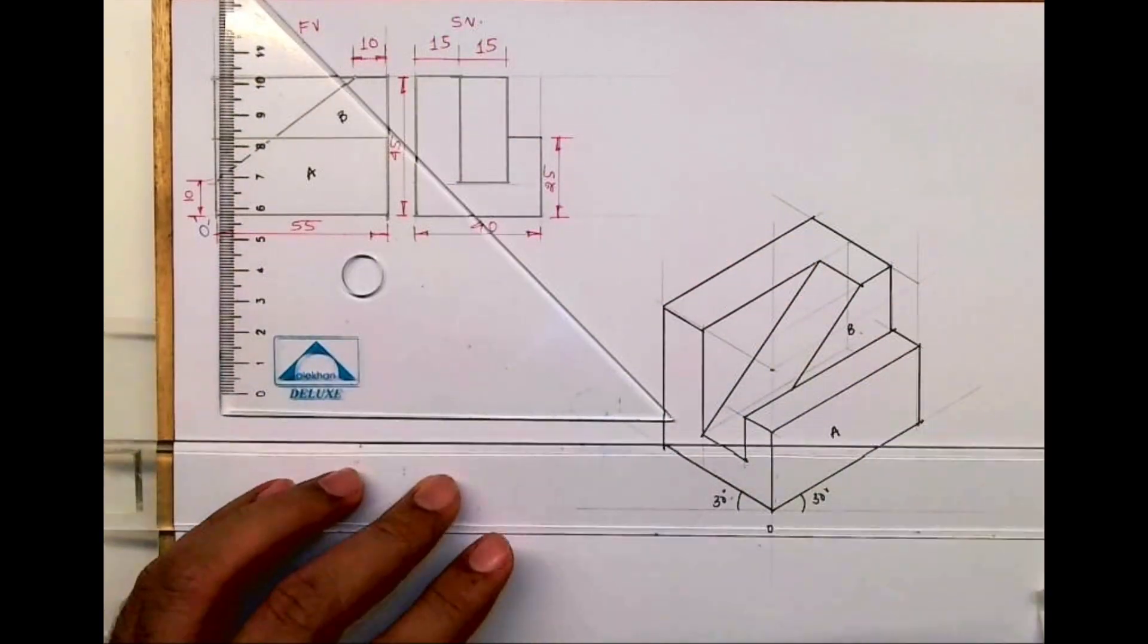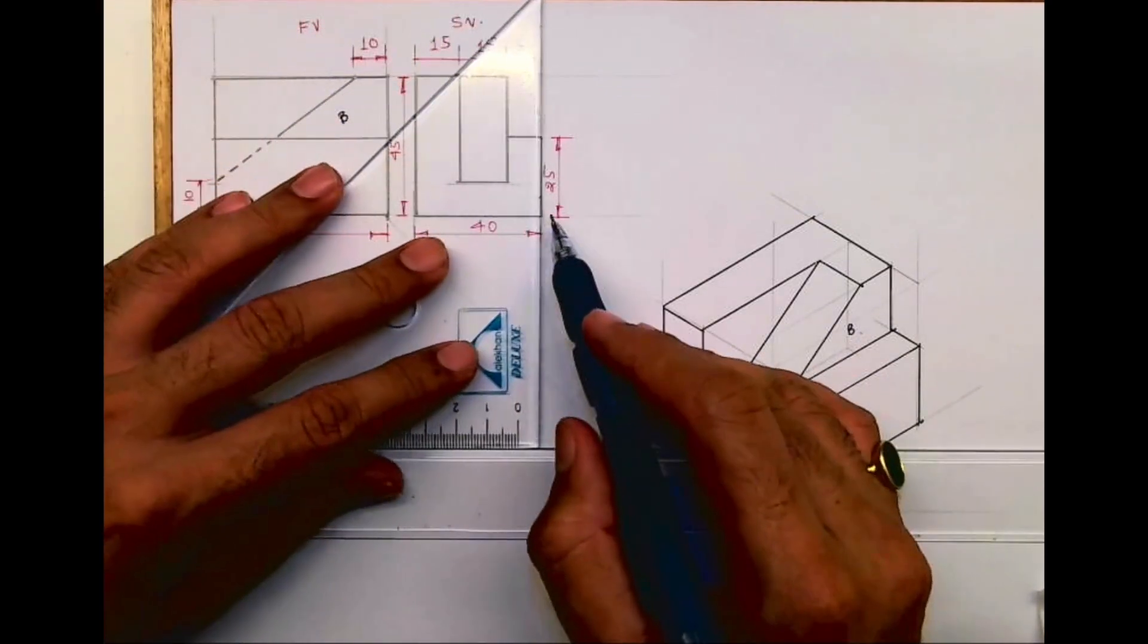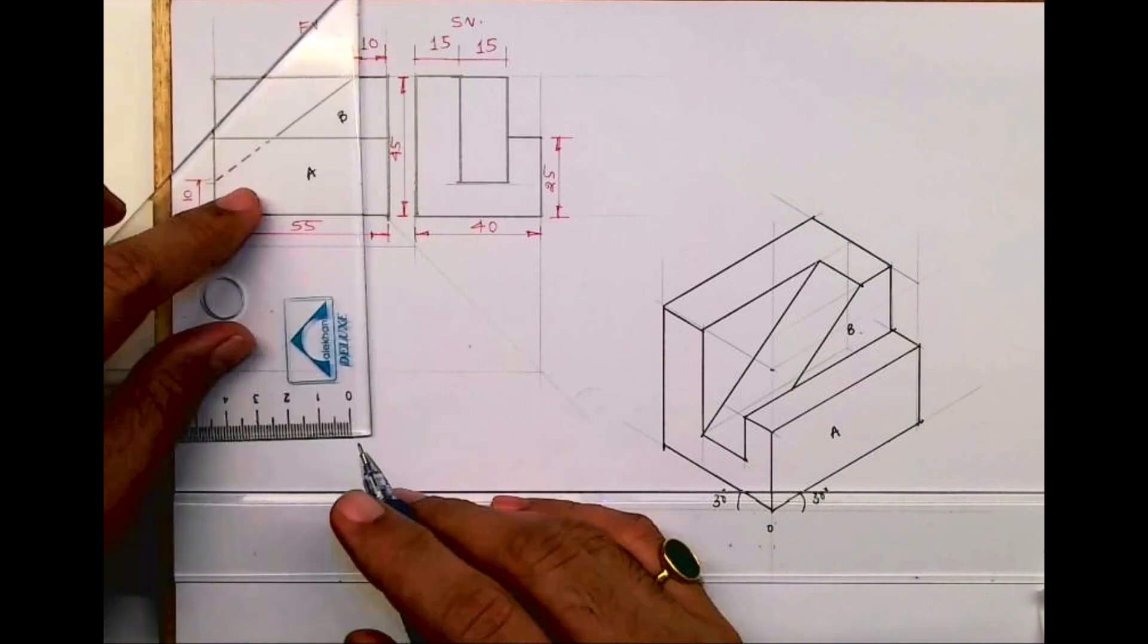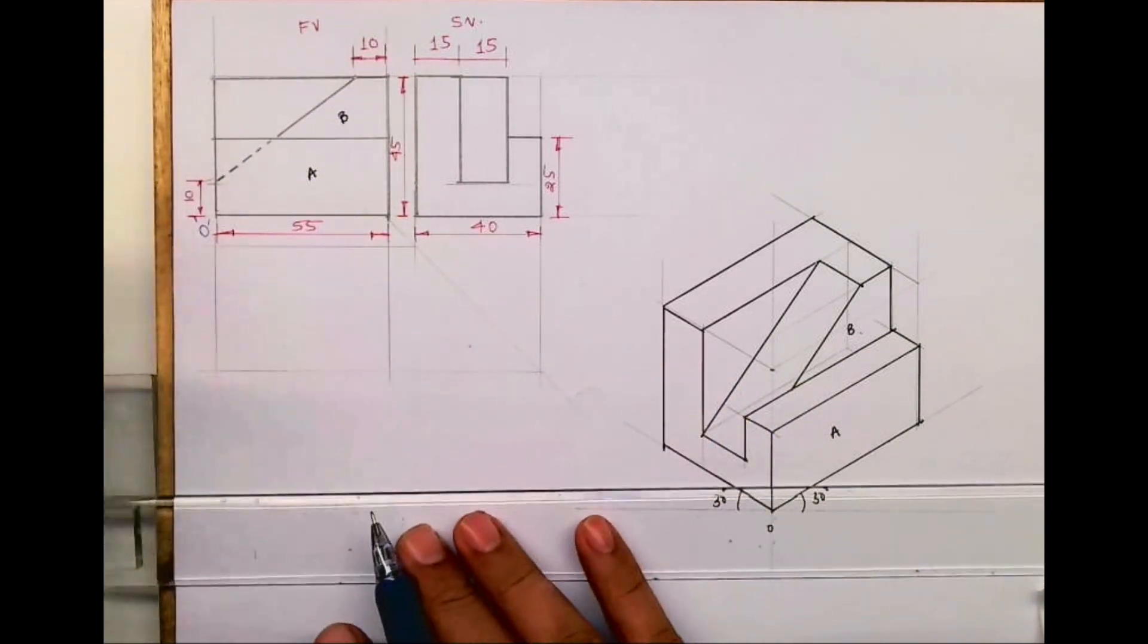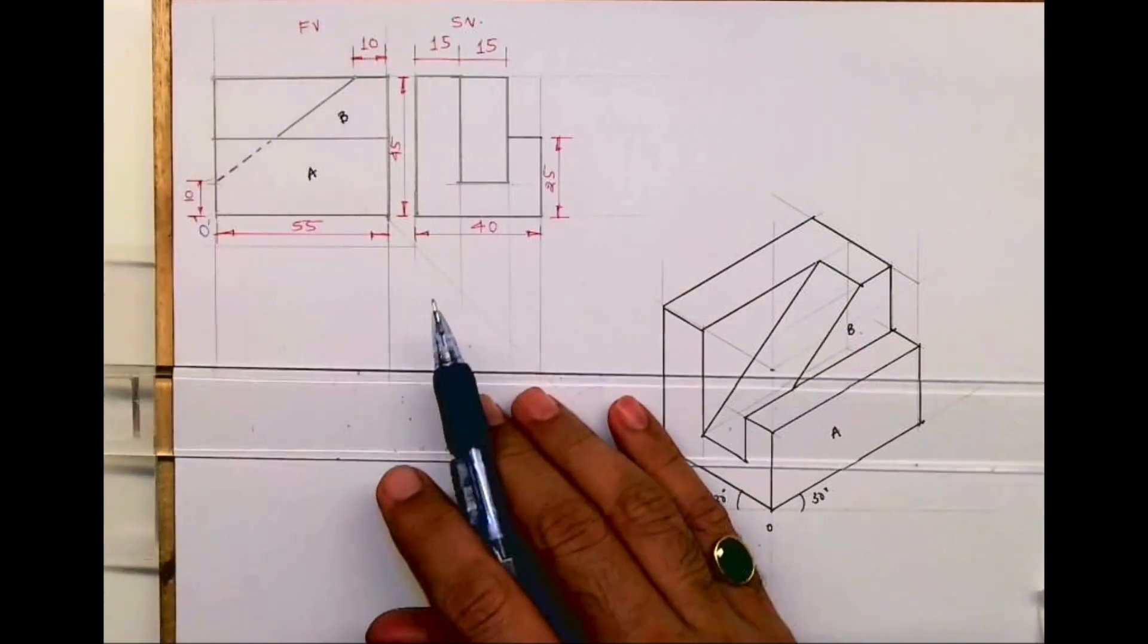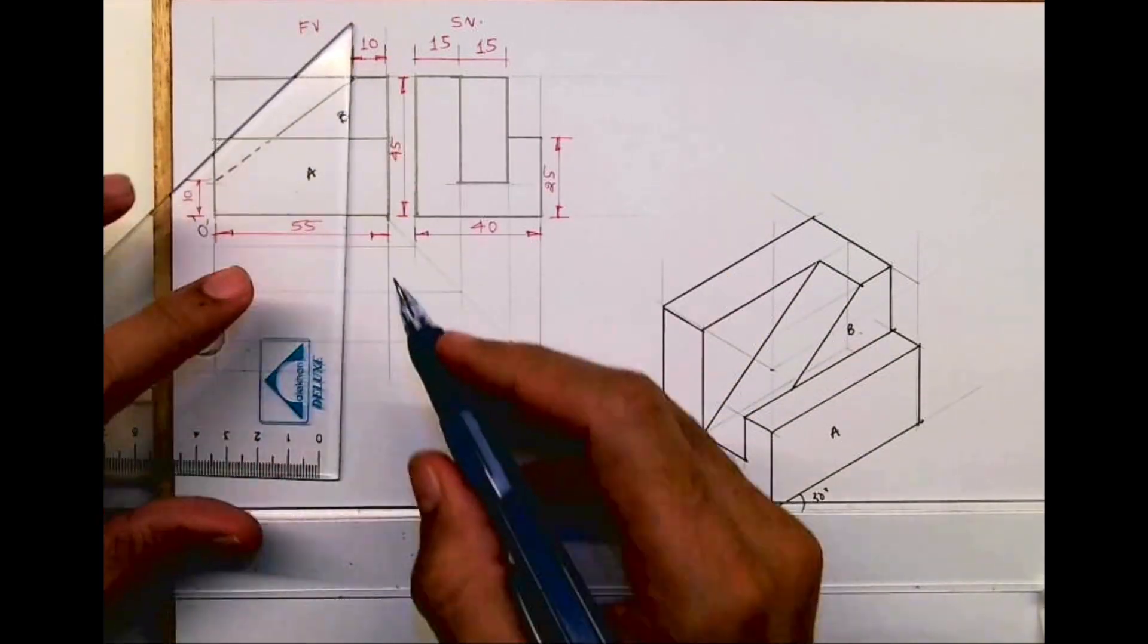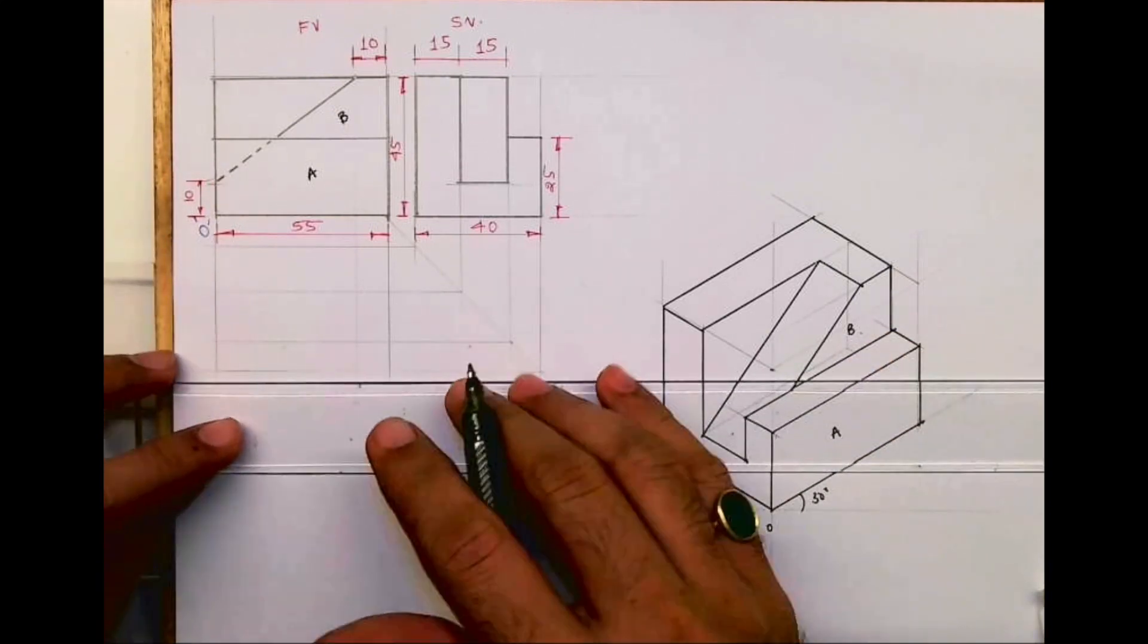Now there is one more part. In CBS we need to draw top view also for assignment. So what we need to do is project from side view and project from front view. Now since we have the isometric, it becomes easier to draw the missing top view and then draw what you can see from top.